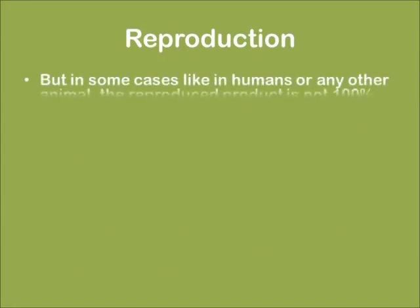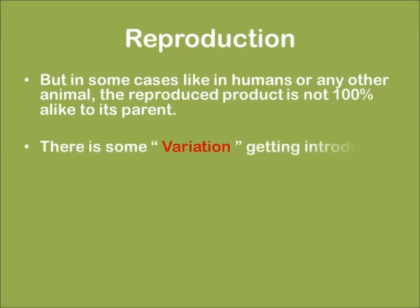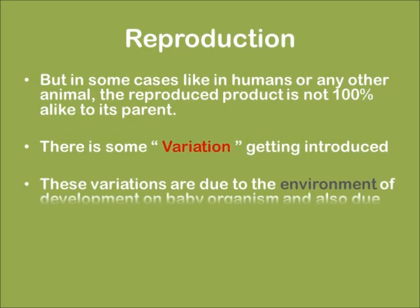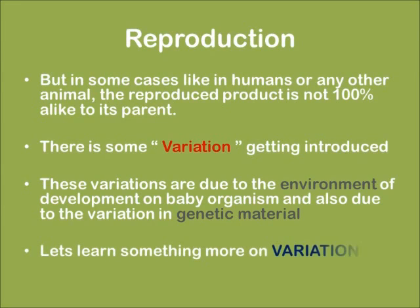But in some cases, like humans or any other animal, the reproduced product is not 100% alike to its parents — there is some variation getting introduced. These variations may be due to the environment of development of the baby organism and also due to variation in the genetic material. Now let's learn something more on variation.